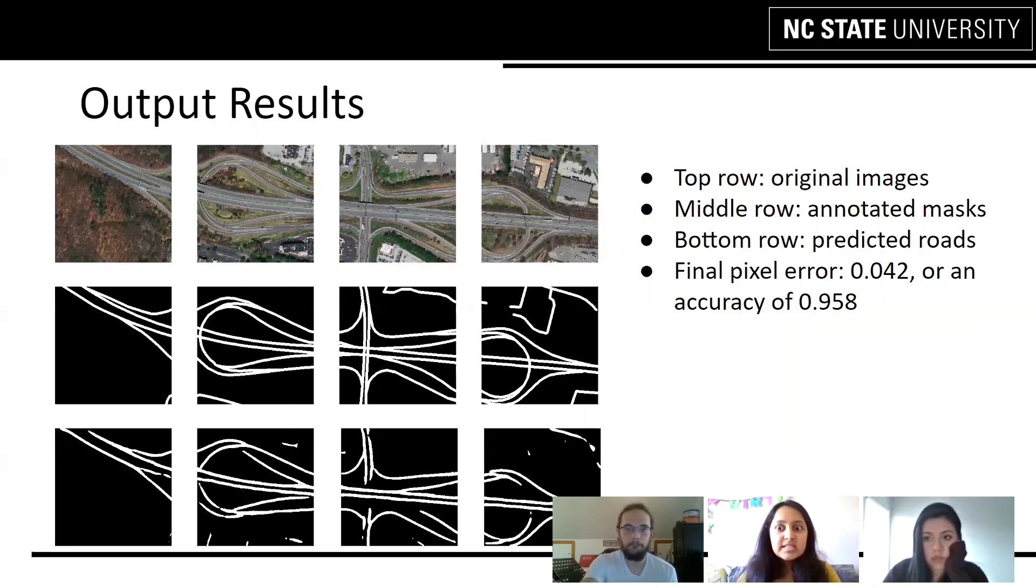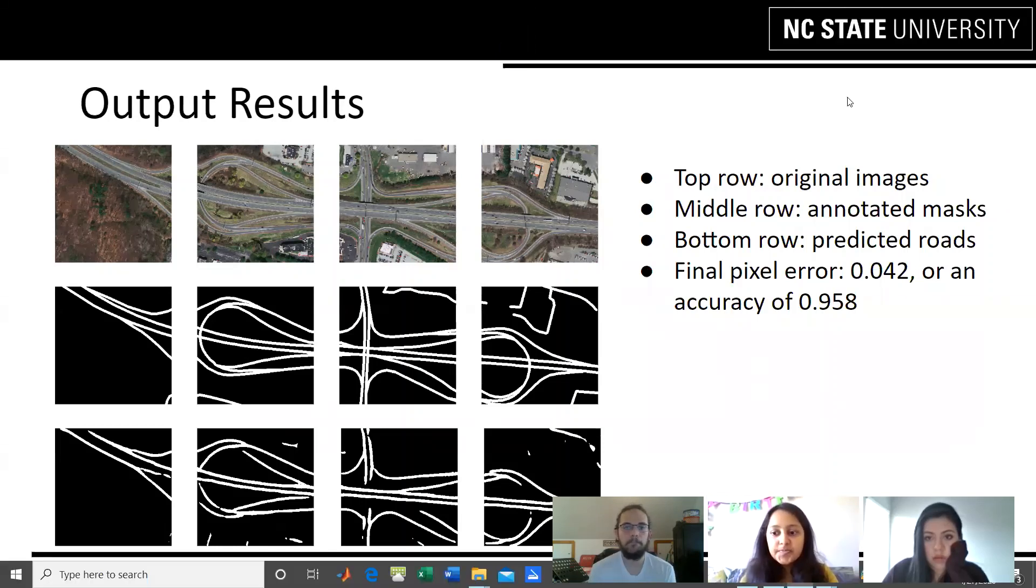Now, here we can see our output results. The top row has the original images. The middle row has the annotated masks, that is the masks that were created by humans itself. The bottom row has the predicted roads, that is the predictions made by our U-Net model. We got the final pixel error rate as 0.042, and an accuracy of 0.958.